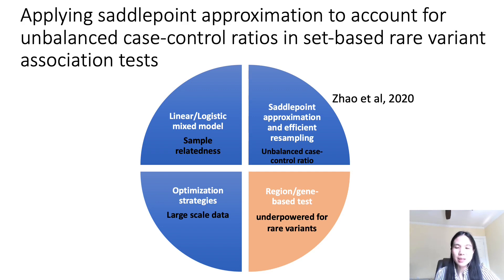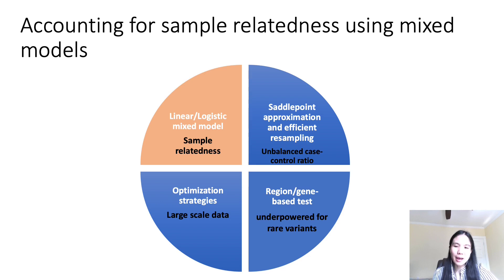In the previous presentation, Zhang Chen talked about accounting for unbalanced case-control ratio of binary traits in the set-based rare variant association tests, using the saddle point approximation and efficient resampling. Next, let's look at accounting for sample-relatedness using mixed models in the set-based rare variant association tests.